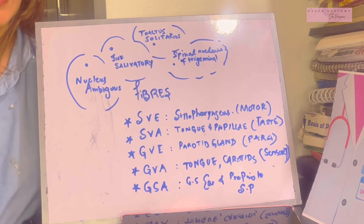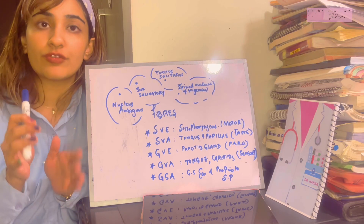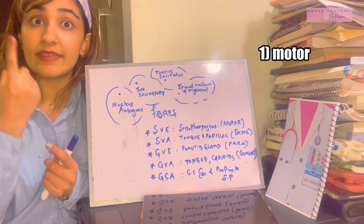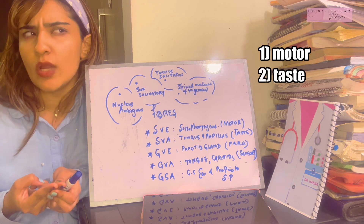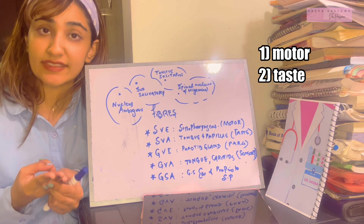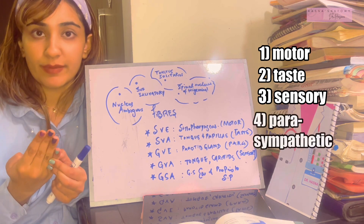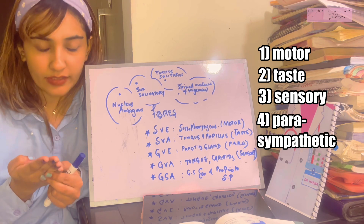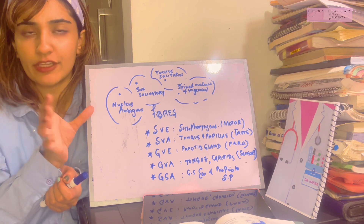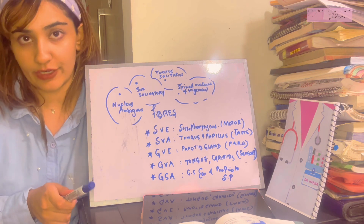The functional components of the glossopharyngeal nerve provide: motor supply to the stylopharyngeus; taste supply to the posterior one-third of the tongue and the circumvallate papillae; general sensory sensation to the posterior one-third of the tongue and the palatine tonsil; parasympathetic secretomotor fibers to the parotid gland; and supply to the carotid sinus and carotid body at the bifurcation of the internal and external carotid artery.